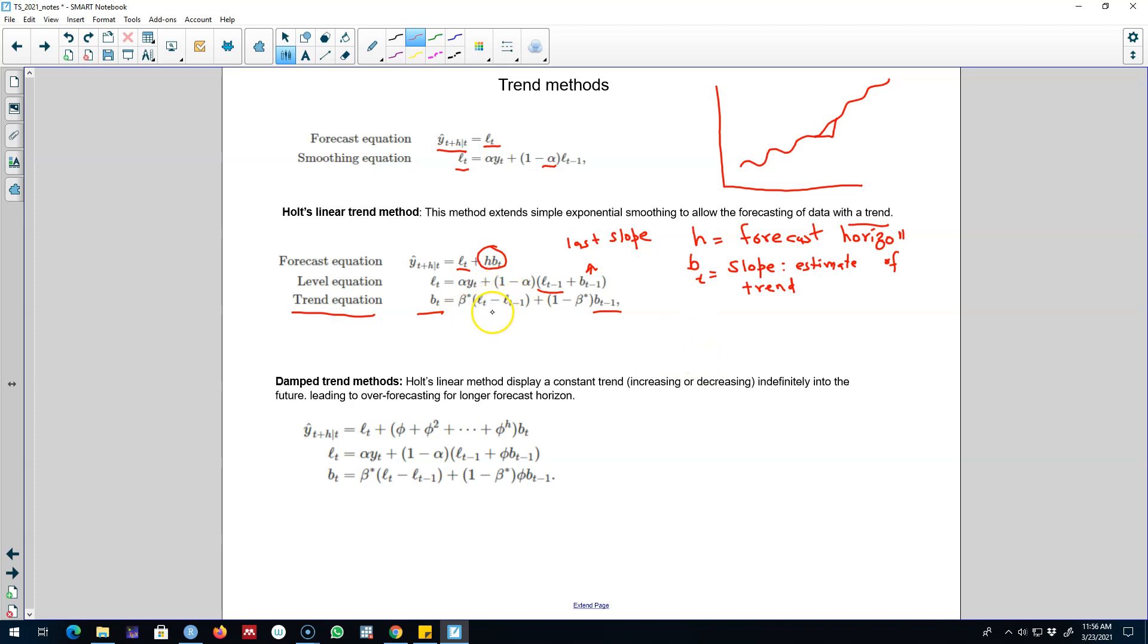And we'll control how much weight we want to assign to this change and this slope parameter by controlling for this smoothing parameter beta star, which is smoothing parameter for the trend. And the value of beta star will be again between 0 and 1.